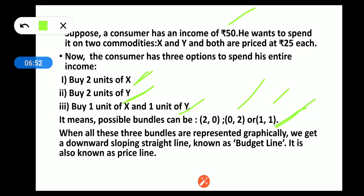When all three bundles are represented graphically, we get a downward sloping straight line known as the budget line. It is also known as the price line. When you draw the graph and plot the combinations, you get a line — we call it the budget line or price line — and it represents combinations that exactly exhaust the income of 50 rupees.